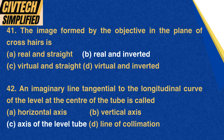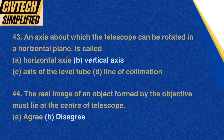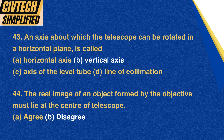Question 41: The image formed by the objective in the plane of crosshairs is: A. Real and straight, B. Real and inverted, C. Virtual and straight, D. Virtual and inverted. Correct option: B. Real and inverted. Question 42: An imaginary line tangential to the longitudinal curve of the level at the center of the tube is called: A. Horizontal axis, B. Vertical axis, C. Axis of the level tube, D. Line of collimation. Correct option: C. Axis of the level tube. Question 43: An axis about which the telescope can be rotated in a horizontal plane is called: A. Horizontal axis, B. Vertical axis, C. Axis of the level tube, D. Line of collimation.